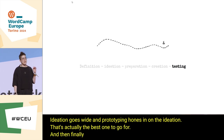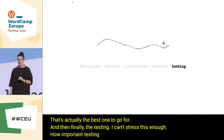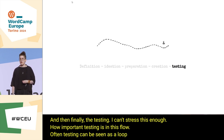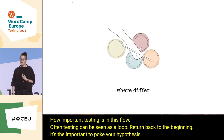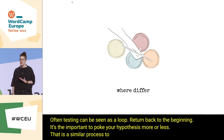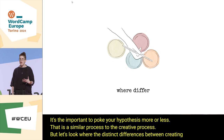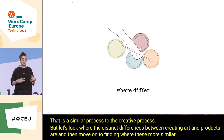From what tech you need to what marketing campaign you're having, products need preparing for as you're creating. Then creation — this is often after ideation. Many product flows merge these two processes together, but ideation and prototyping should be unique. Ideation goes wide and prototyping hones in on the ideation that's the best to go for. And then finally, testing. I can't stress enough how important testing is in this flow. Often testing can be seen as a loop returning back to the beginning — it's important to poke your hypothesis.